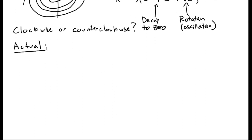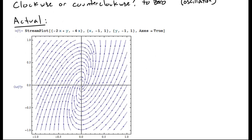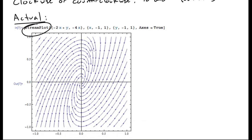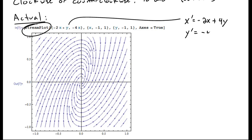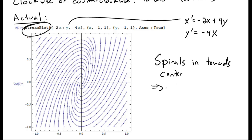Let's look at what it actually is in Mathematica. Here we see the actual plot. In Mathematica, you use the StreamPlot function, and inside its arguments you provide x' and y'. This confirms the spiraling-in behavior, which is different from the previous example where solutions were growing with time.